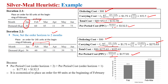Again we see that when considering a planning horizon of two, the per period cost starts increasing. So the decision at the end of iteration two is: to meet February's demand, order at the start of February equal to the demand of February, which is 60.